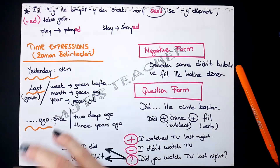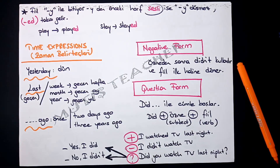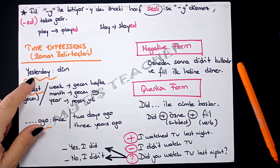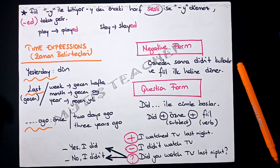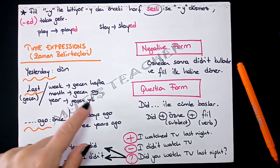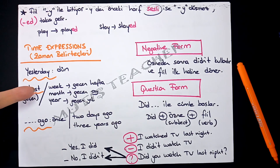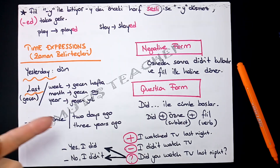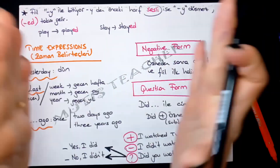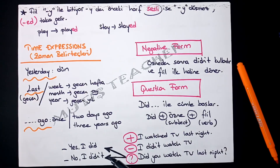Peki bir cümlenin geçmiş zaman olduğunu nasıl anlarsın? Tabii ki time expressions — zaman belirteçleriyle. Yesterday (dün), last week (geçen hafta), last month (geçen ay), last year (geçen yıl) gibi 'last' önekleri kullanılır. Bir de 'ago': two days ago (iki gün önce), three years ago (üç yıl önce). Bu zaman belirteçleri cümlenin başında ya da sonunda olabilir.